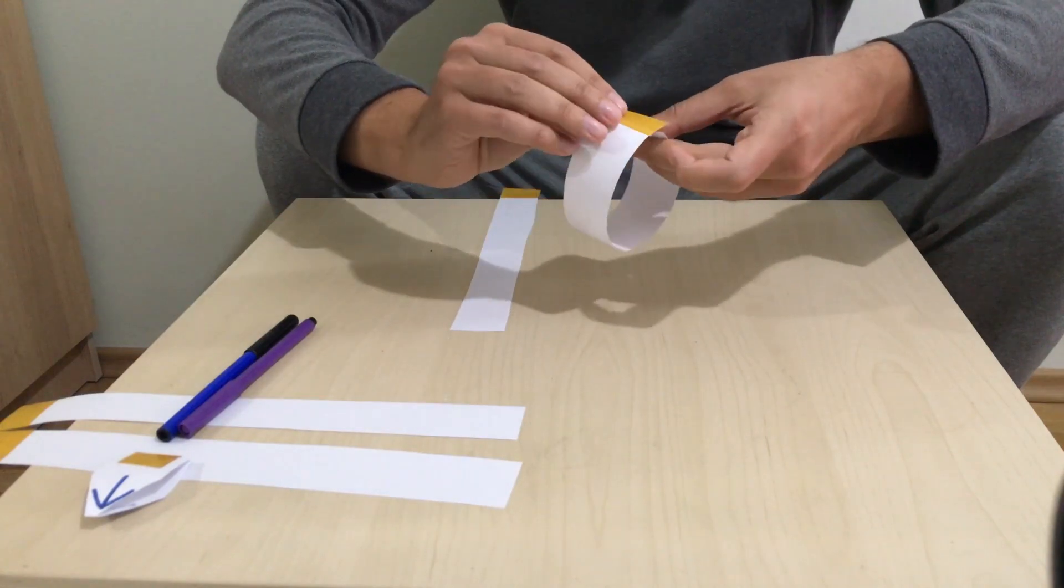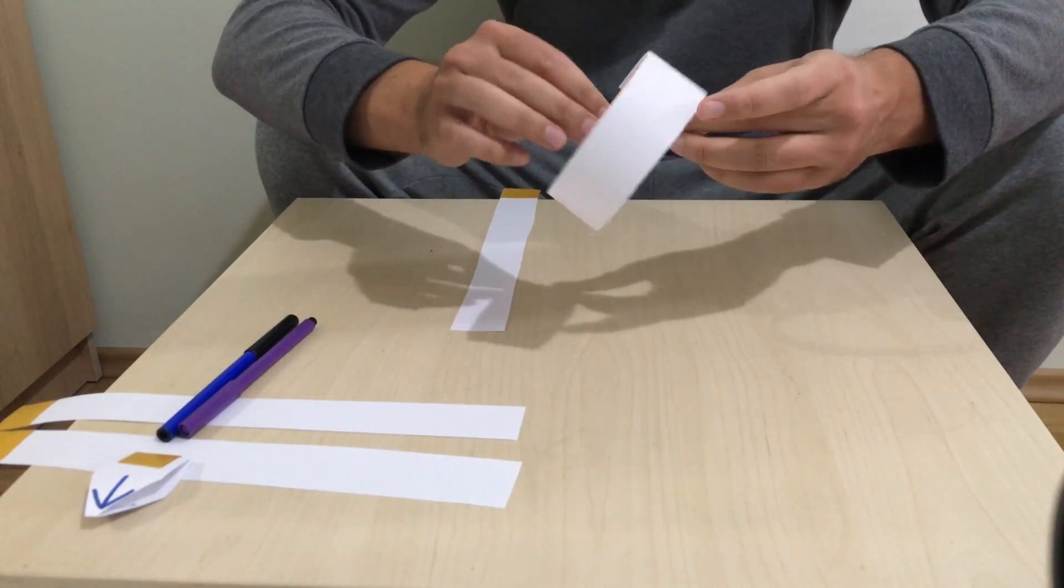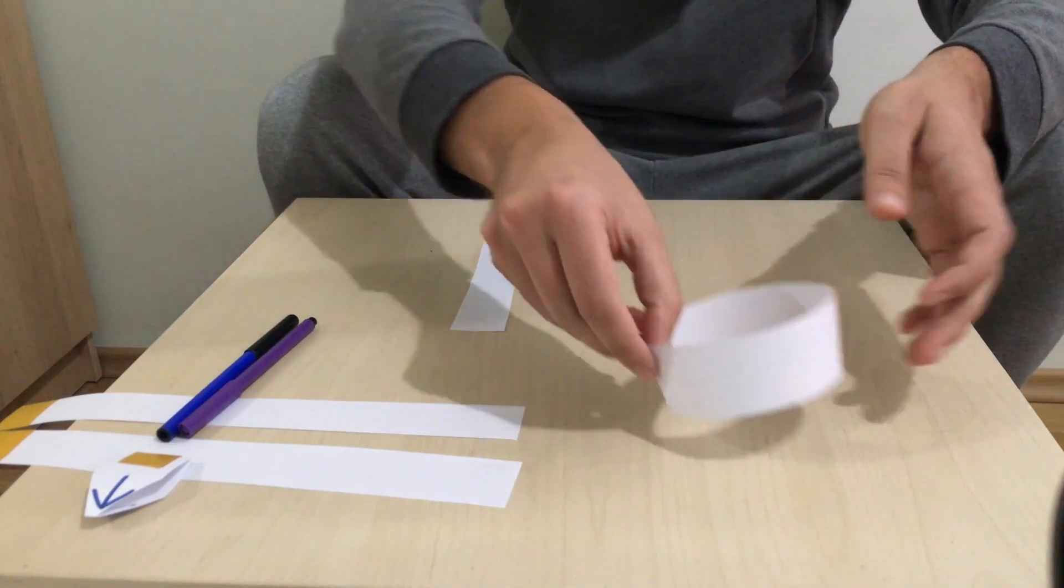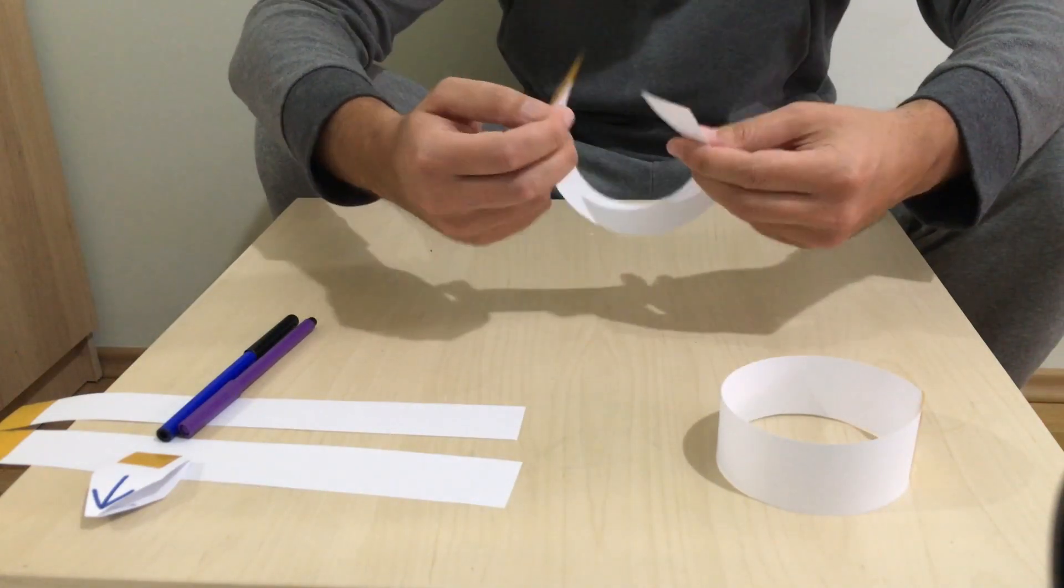I can twist it, make a circle or better, a cylinder, and with the tape I can glue it. So we have an inner and outer surface and two edges.